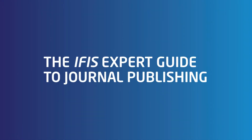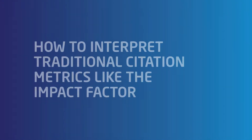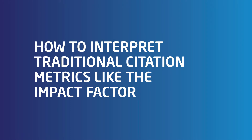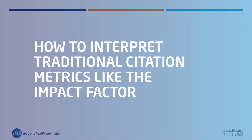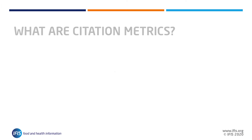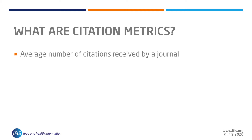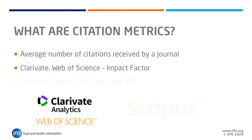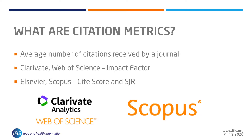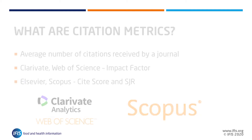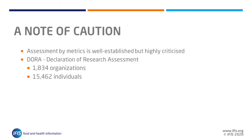This video in our expert guide to journal publishing looks at citation metrics and how they can be used when deciding to submit to journals. In simple terms, the key citation metrics are an average of citations received by a journal within a particular time frame. Around the world, academic assessments are based on publishing in journals in key indexes such as Web of Science or Scopus databases, or in journals with impact factors above certain numbers.